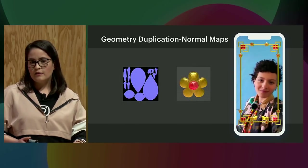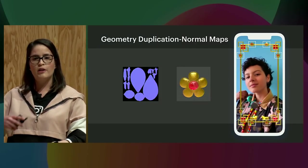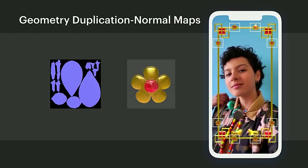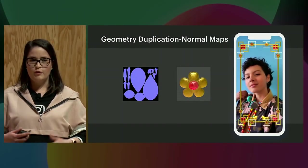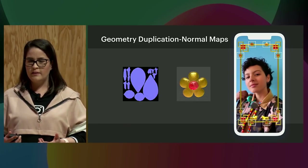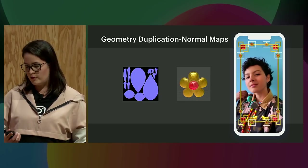Another thing to keep in mind: when we were building this effect, we knew some details were going to be repeated across the frame, so we exported those as a separate FBX and then duplicated it to where it needed to go after importing into AR Studio. This kept our file size fairly small. Another way to add extra detail without adding geometry is normal maps — this is very much used in the video game industry, and this way you can avoid adding a lot of extra geometry to your effects.